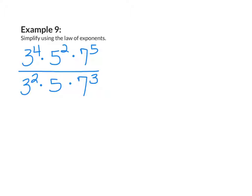Example 9: Simplify using the law of exponents. In this example, my numbers are bases, so my bases will not change. I'm going to look at my first base, which is 3. I'm going to look at my exponents, which are 4 and 2, subtract them, and that will give me 3 to the power of 2. My next base is 5 — I'm going to subtract my exponents, 2 and 1, and that gives me 1. My next base is 7 — I'm going to subtract 5 and 3, and that gives me 2. So my answer is 3 to the power of 2 times 5 to the power of 1 times 7 to the power of 2.